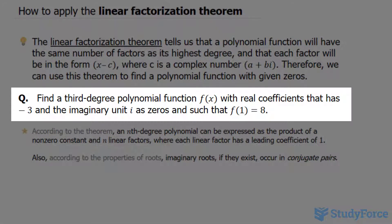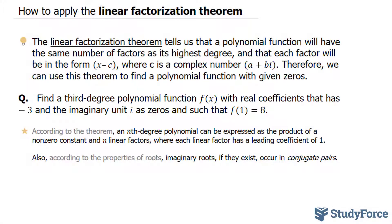The question reads: find a third-degree polynomial function f(x) with real coefficients that has -3 and the imaginary unit i as zeros and such that f(1) = 8.